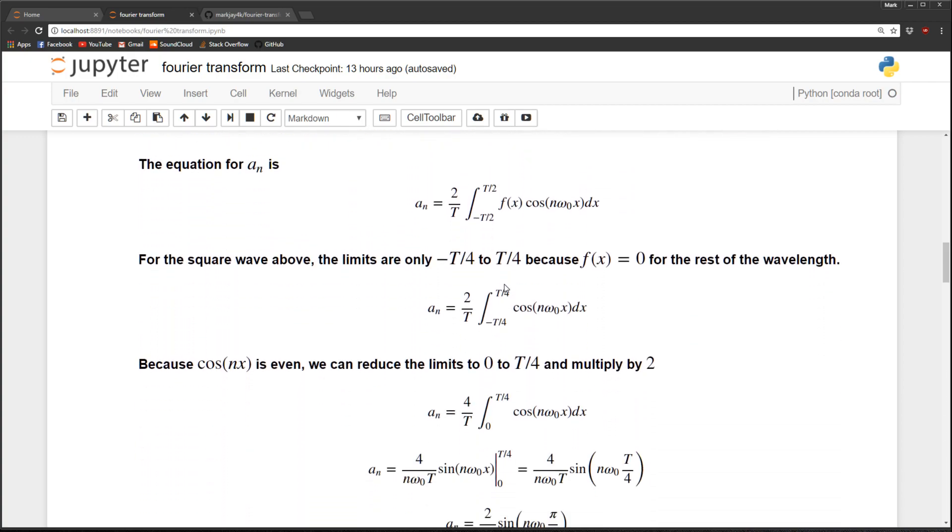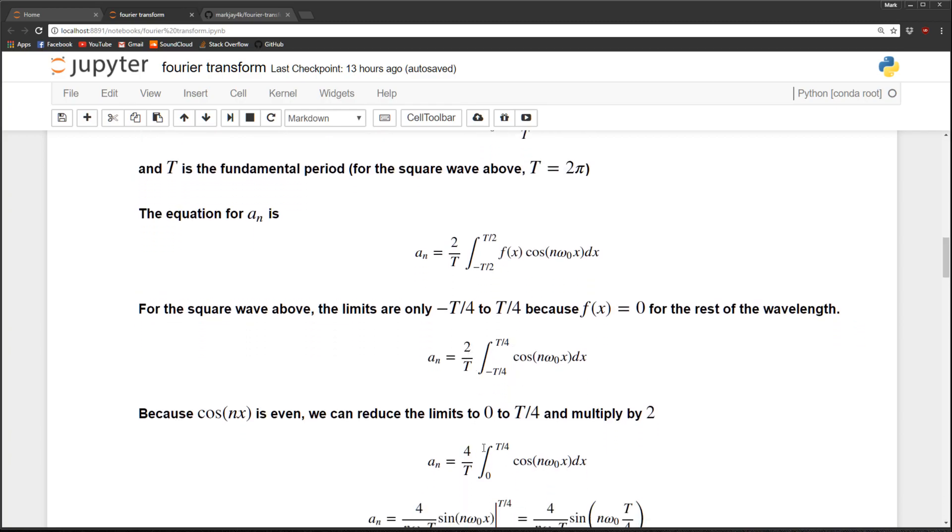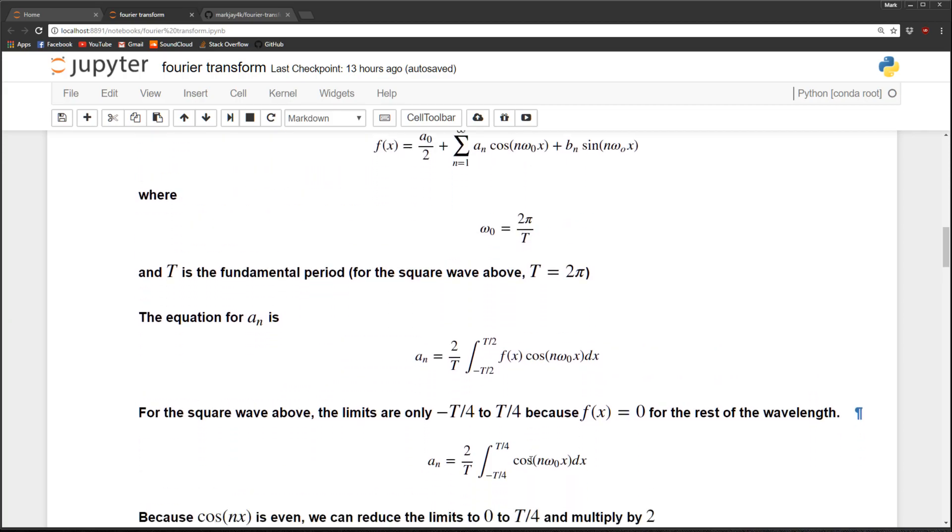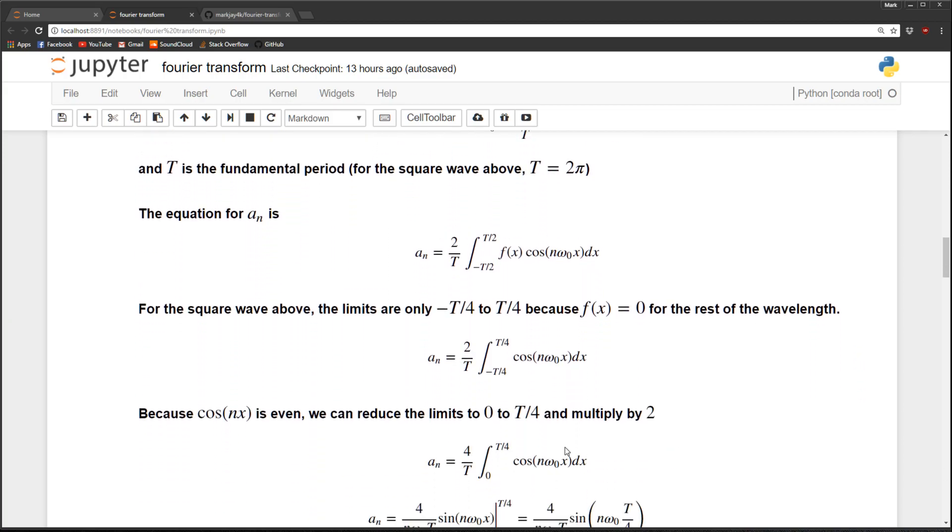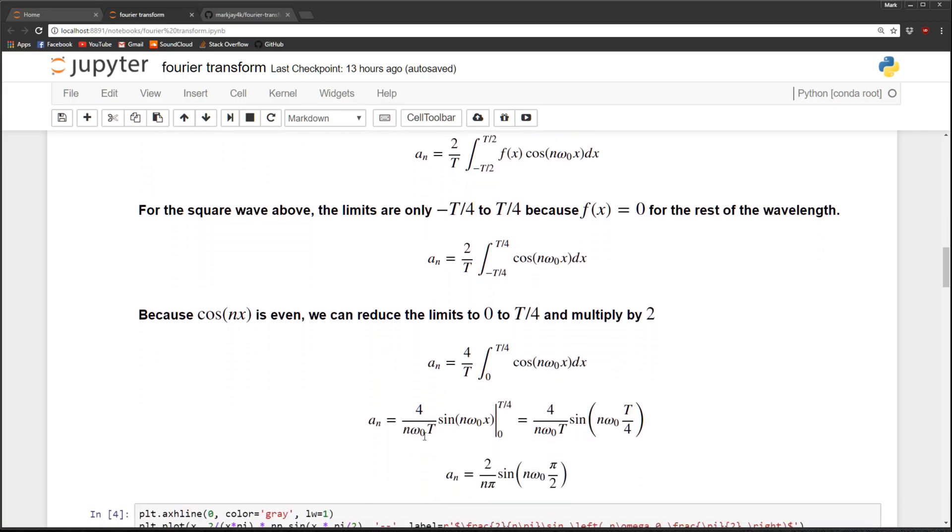So what we can do is just do the integral from zero to right here and just multiply the whole thing by two. So that's what I do here. I multiply by two and our limits are zero to T over four. And this is actually a pretty simple integral. It's just the integral of cosine is sine and we have to divide by the terms inside, so we divide by that n omega naught, and we evaluate the integral from zero to T over four.